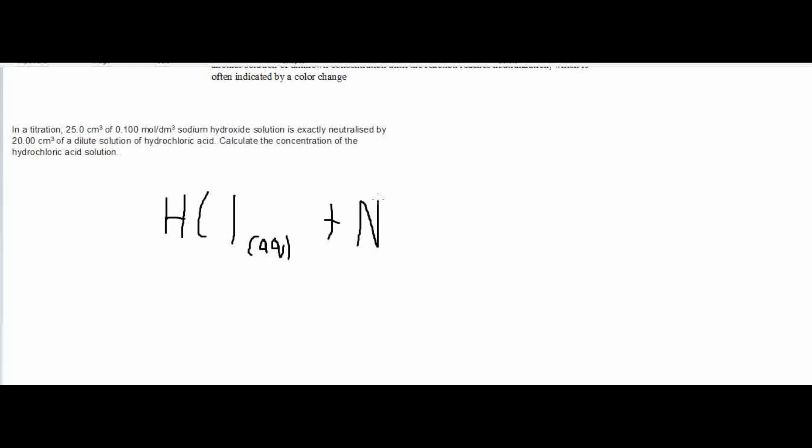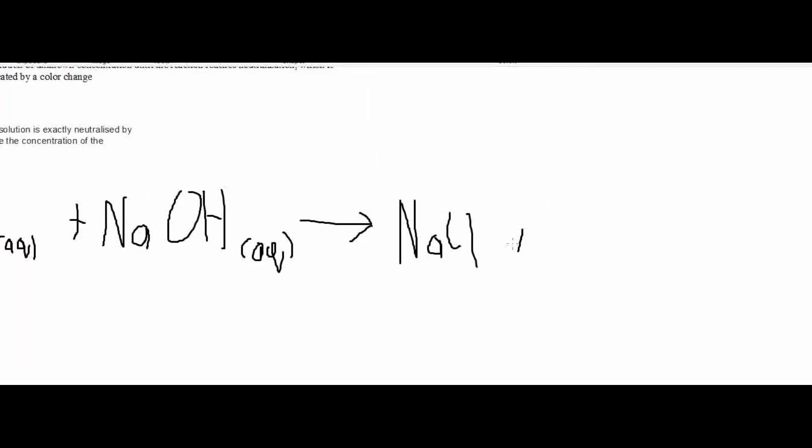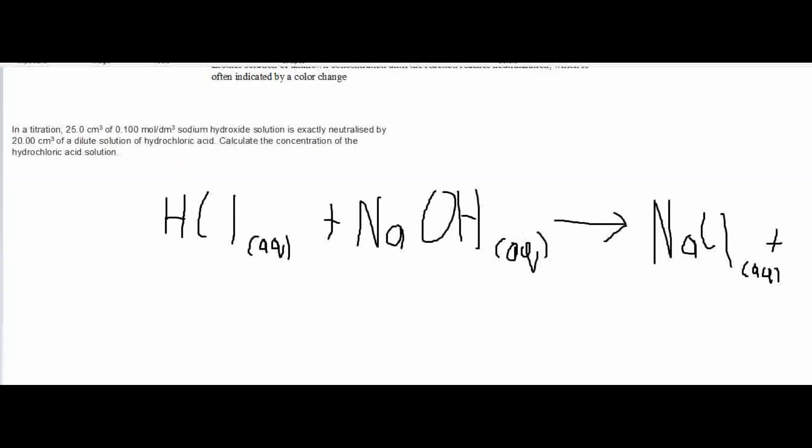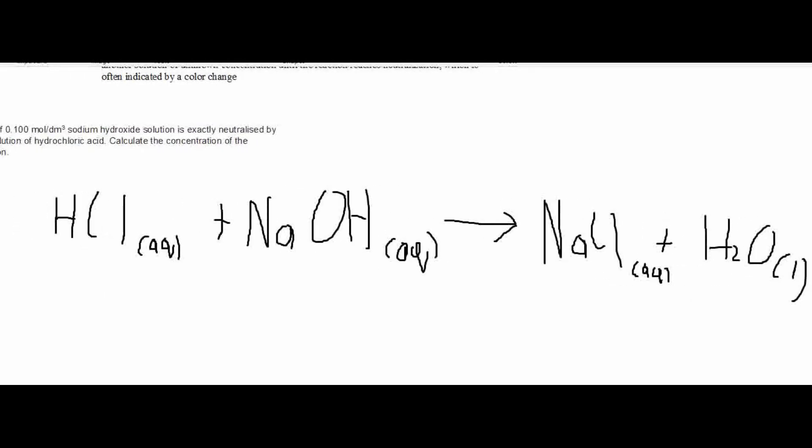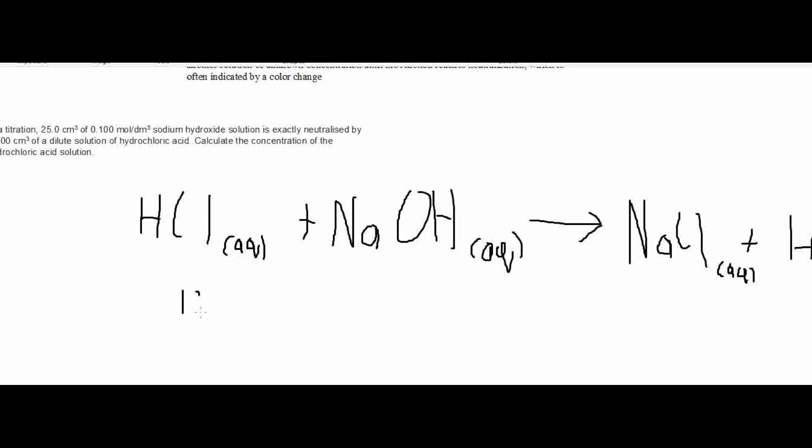HCl (aq) plus NaOH (aq), also an aqueous solution, and that is going to produce NaCl (aq) plus H₂O (l). Because as we know, reaction of an acid and a base gives us salt and water. So this is the balanced equation we have here, and we can tell that the mole ratio is 1:1.